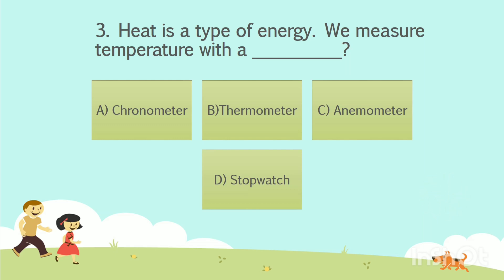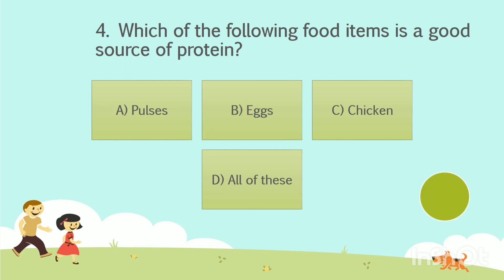The answer is Option B: Thermometer. Question number 4. Which of the following food items is a good source of protein? Option A: Pulses. Option B: Eggs. Option C: Chicken. Option D: All of these. Your time starts now.